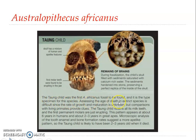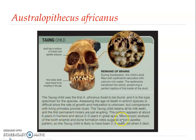Assessing the age of death in extinct species is difficult since the rate of growth and maturation is unknown. The Taung Child retains all its milk teeth and the first permanent molars are just erupting. This pattern appears at about six years in humans and about two to three years in great apes. Microscopic analysis of tooth enamel and bone formation rate suggests a more ape-like pattern, so the Taung Child is likely to have been two to three years old at time of death.